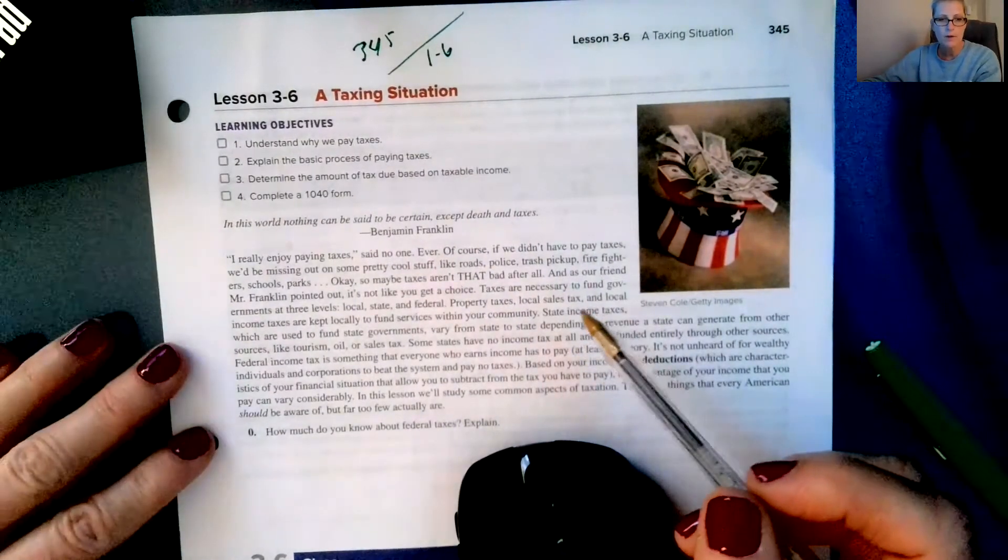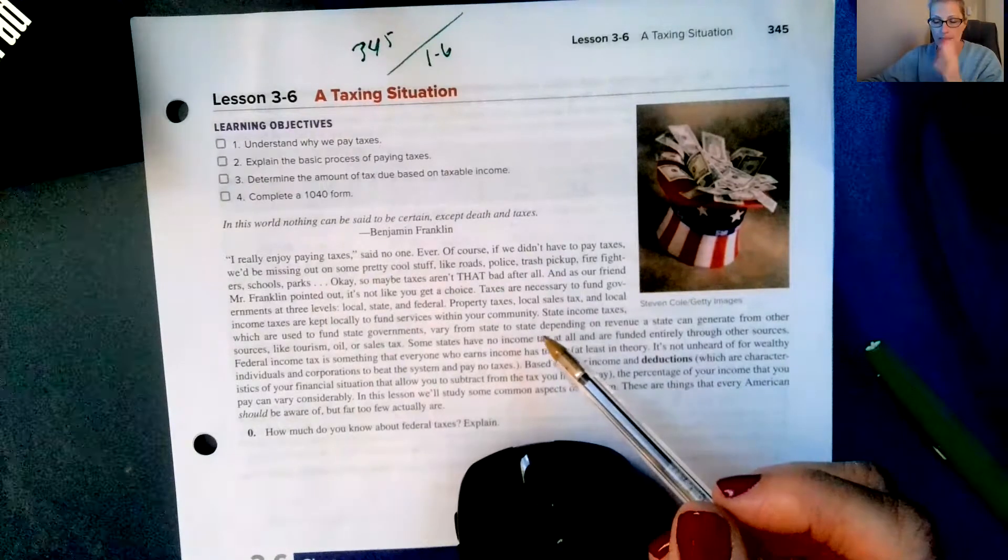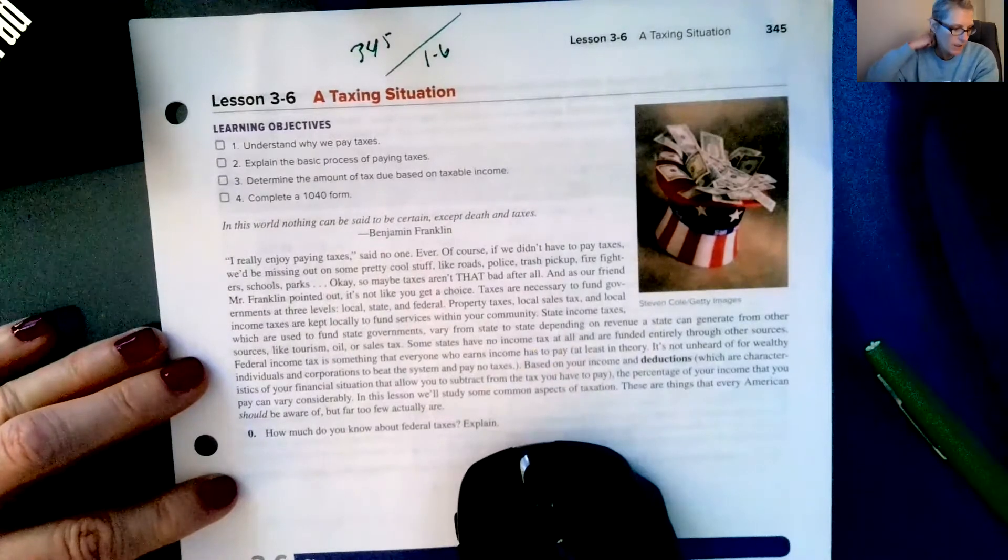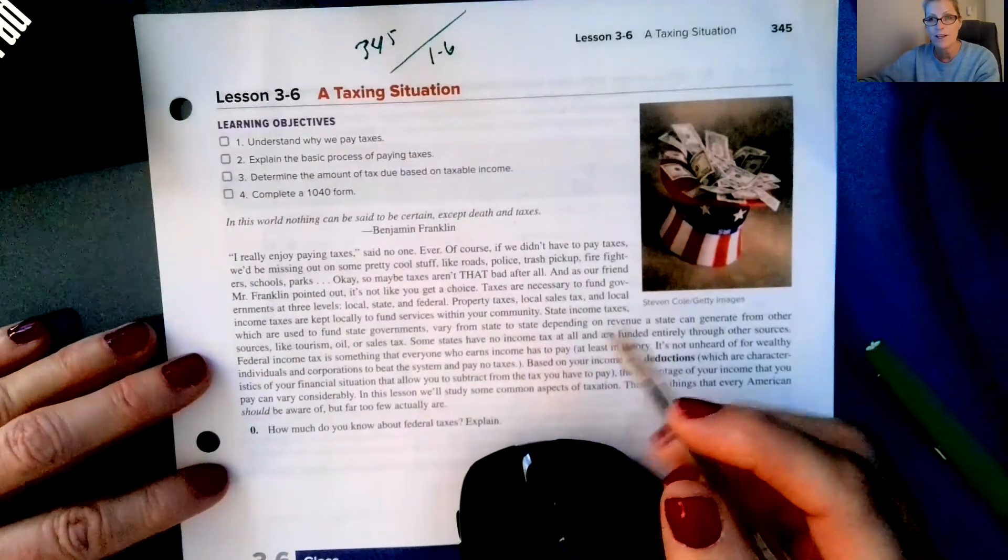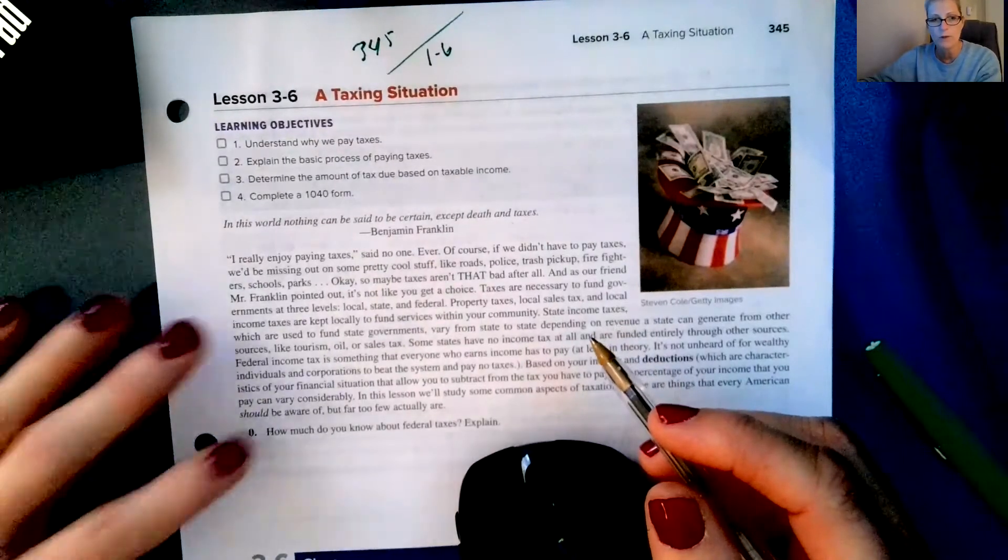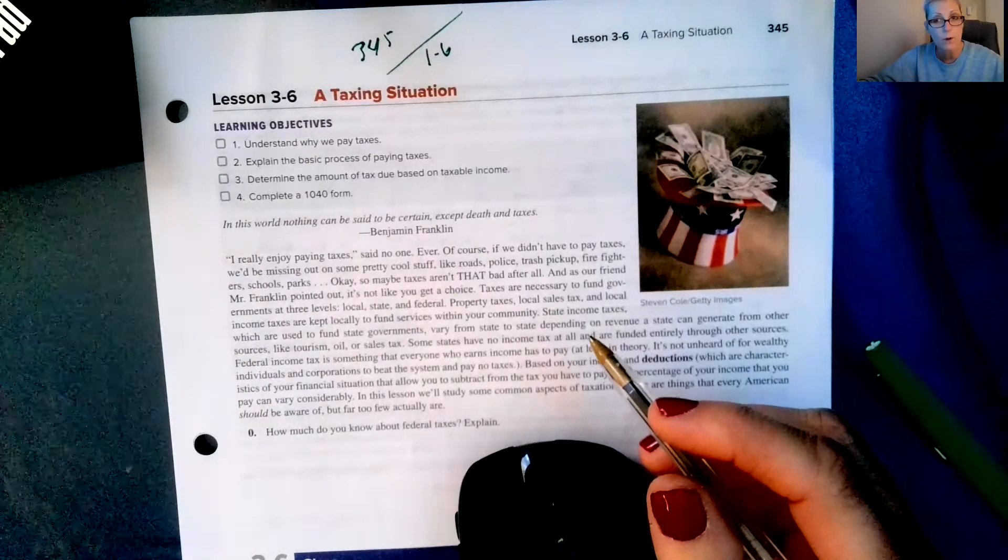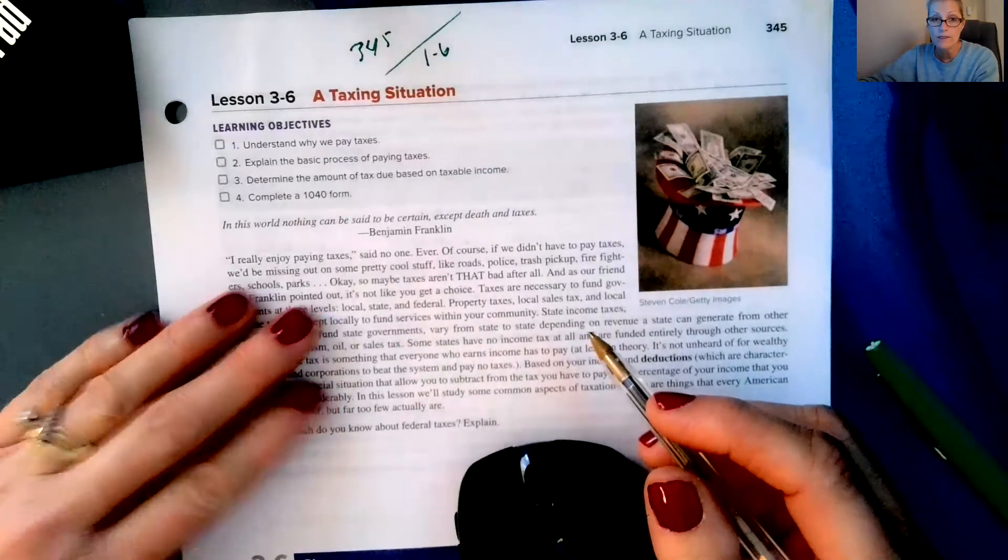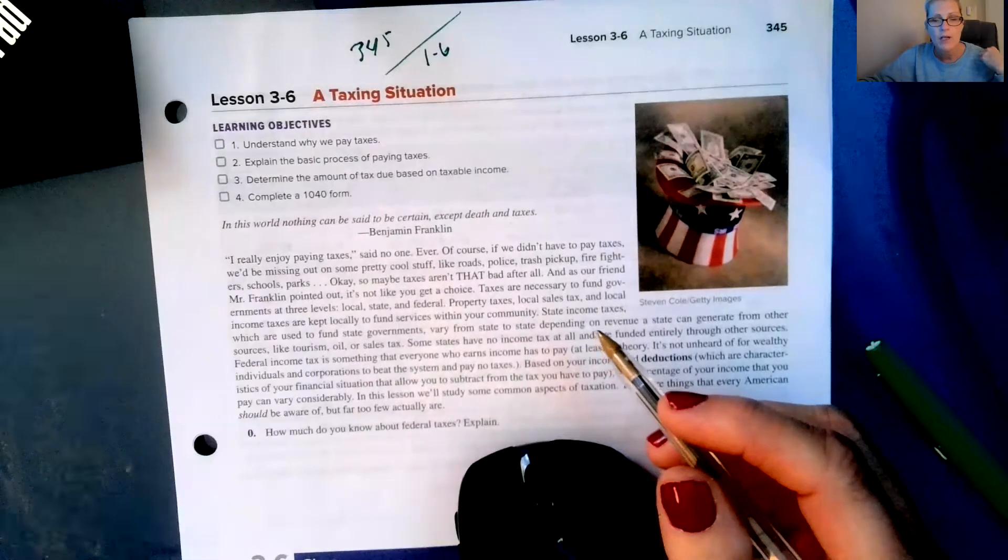So today we're going to be talking about your income taxes based on your wages. There's a couple different taxes that we pay. We pay to the federal government, and depending on what state you live in, you don't pay or you do pay a state income tax. So in Michigan we pay a state income tax. There are a handful of states where you don't pay a state income tax.